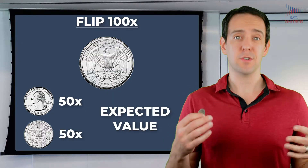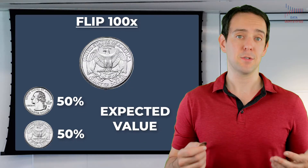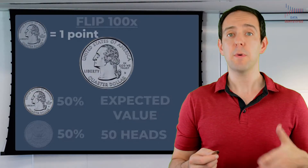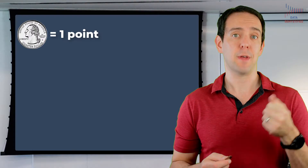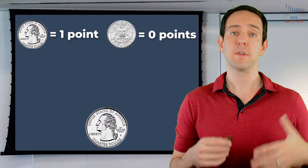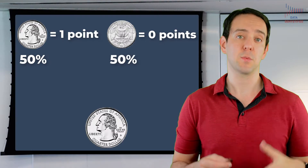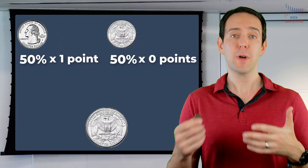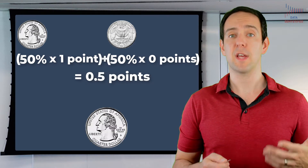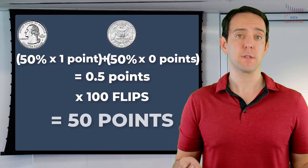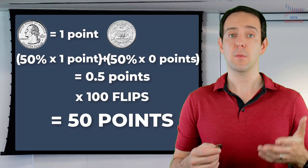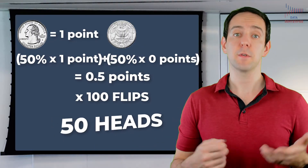Basically, you intuitively understood that if there's a 50% chance of a coin coming up heads or tails, and you repeat that flip 100 times, you get an expected value of 50 heads. A bit more formally, we can say that we give a point every time that coin comes up heads, and give zero points every time it comes up tails. So on our first hypothetical flip, there's a 50% chance we'll get one point, and a 50% chance we'll get zero points. If I multiply those out and add them up, I get half a point. That means that every single coin flip will earn us half a point, and if I do this 100 times, I get 50 points. Since we said that points are just our reflection of how many times heads comes up, we can say that we expect, out of 100 flips, 50 of them to be heads.